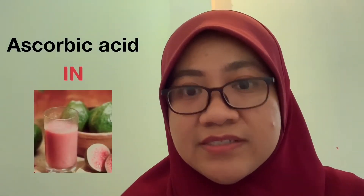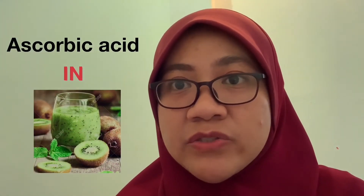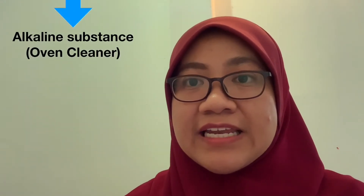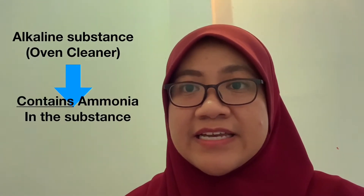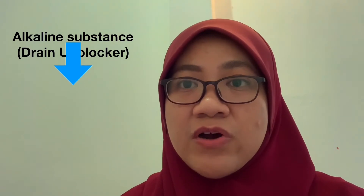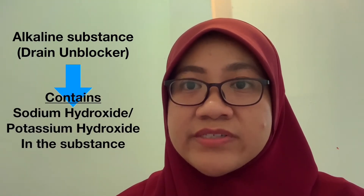Examples of alkaline substances in our daily life: oven cleaner, which contains ammonia; baking soda, which contains sodium bicarbonate; and drain unblocker, which contains strong alkaline substances sodium hydroxide and potassium hydroxide.